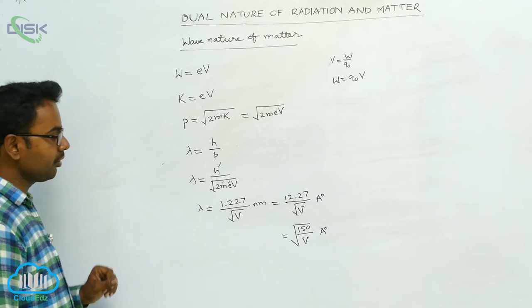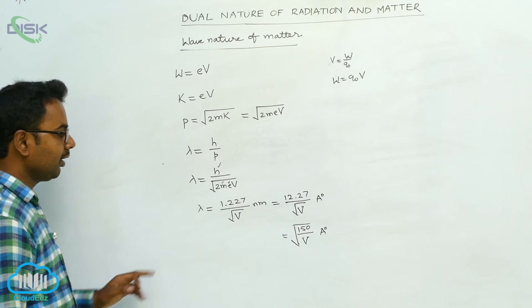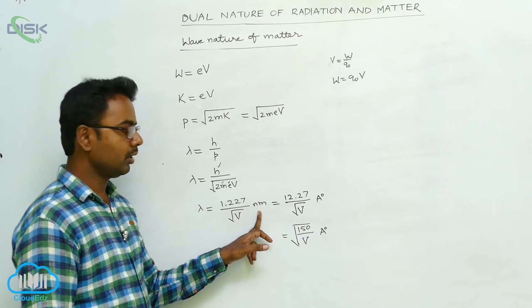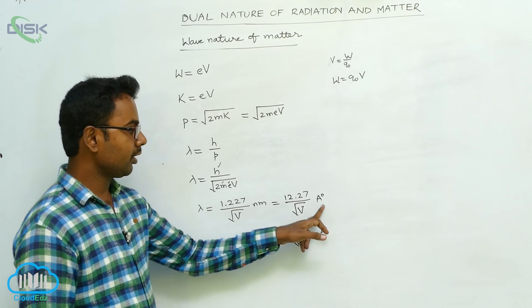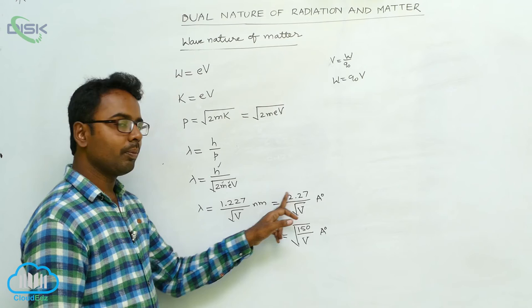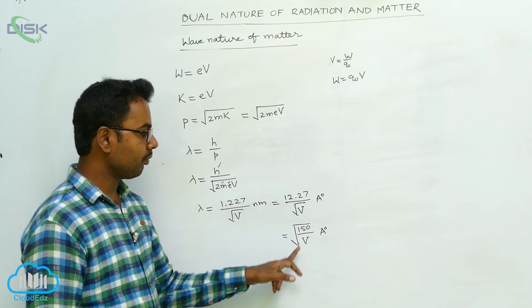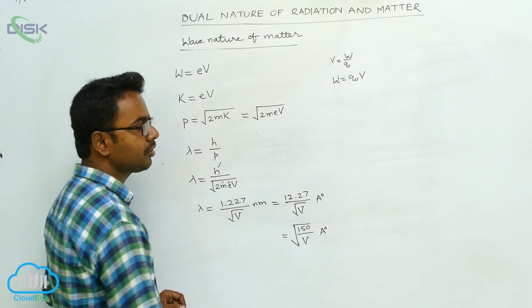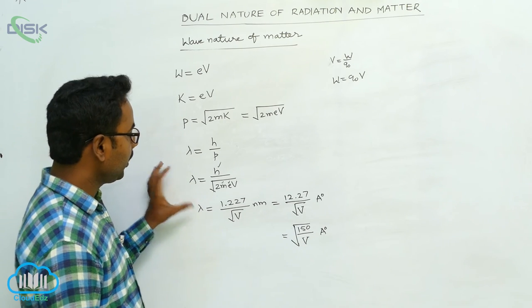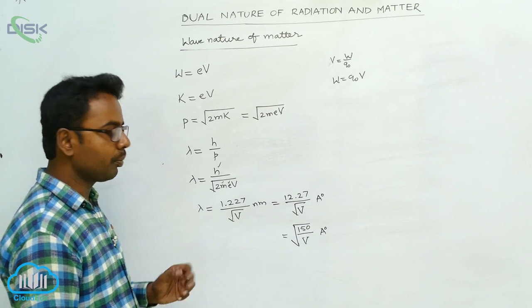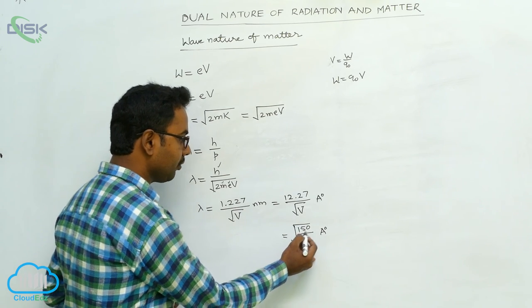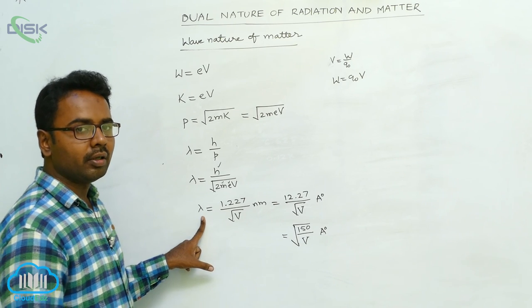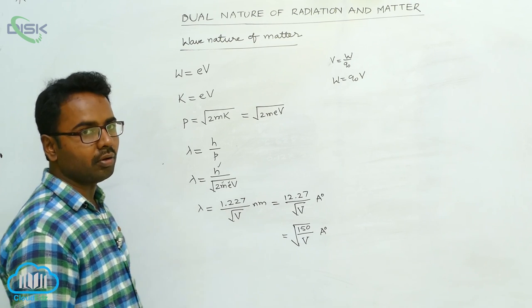By substituting the values, wavelength lambda = 1.227/√V nanometers, or equivalently 12.27/√V angstroms, also equal to √150/V angstroms. Using this general formula, when an electron is accelerated through a potential difference V, we can calculate the wavelength associated with the electron.